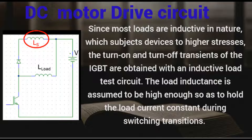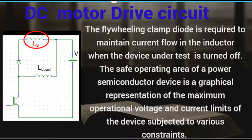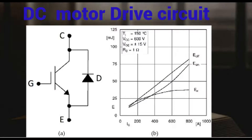Since most loads are inductive in nature, which subjects devices to higher stresses, the turn-on and turn-off transients of the IGBT are obtained with an inductive load test circuit. The load inductance is assumed to be high enough to hold the load current constant during switching transitions. The flywheeling clamp diode is required to maintain current flow in the inductor when the device under test is turned off. The safe operating area of a power semiconductor device is a graphical representation of the maximum operational voltage and current limits of the device. The forward bias and reverse bias safe operating areas represent the device safe operating area with the gate-emitter junction forward or reverse biased, respectively.